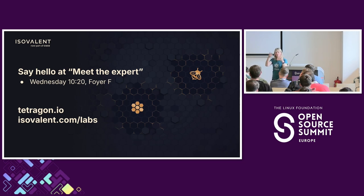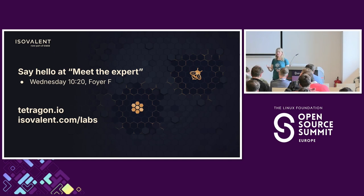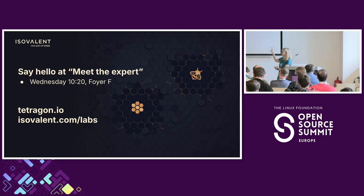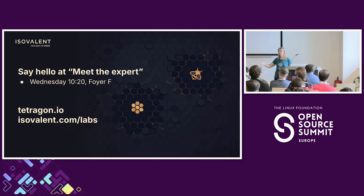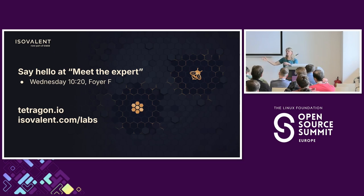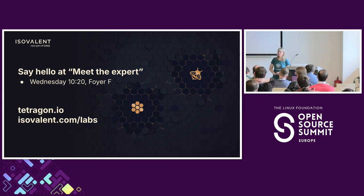Question: could that process of writing policies be automated and provided as a service? One of the reasons Cisco acquired Isovalent is because they're very interested in the Tetragon technology, and they're building it into a product called Hypershield, which does exactly that — it automates creating these policies, provides the service of distributing them, and allows you to see whether other people have applied a given policy safely.